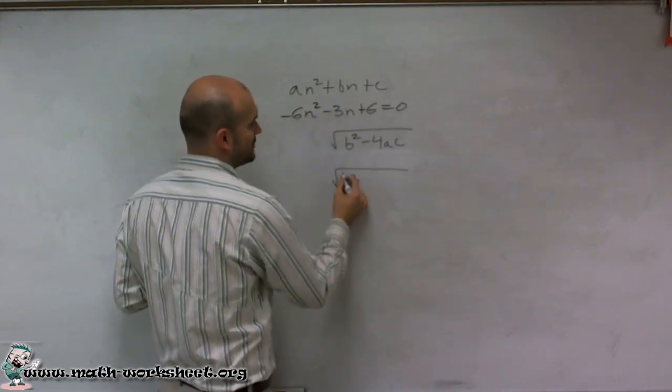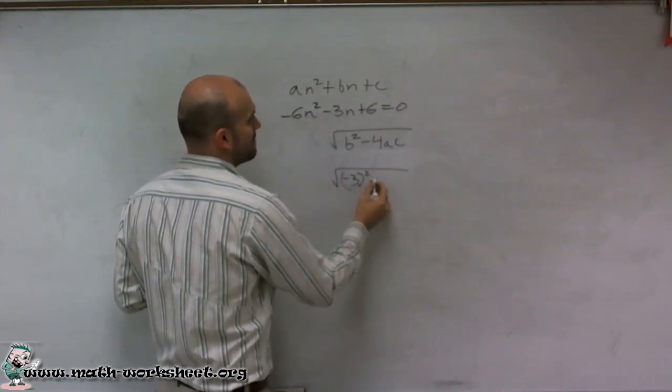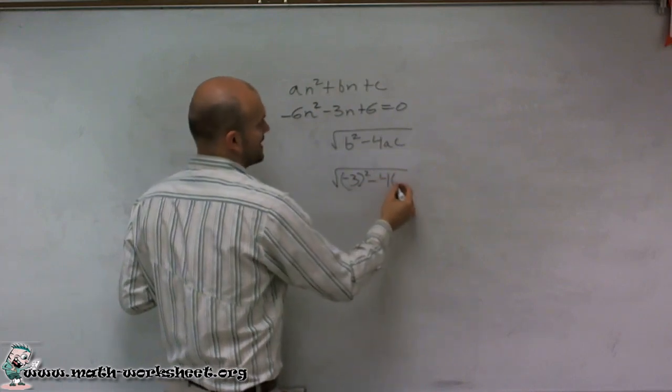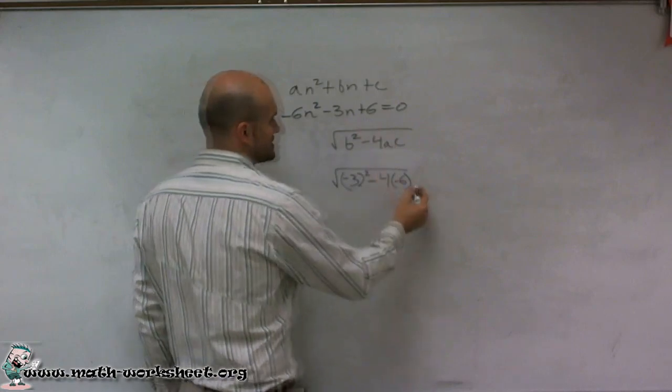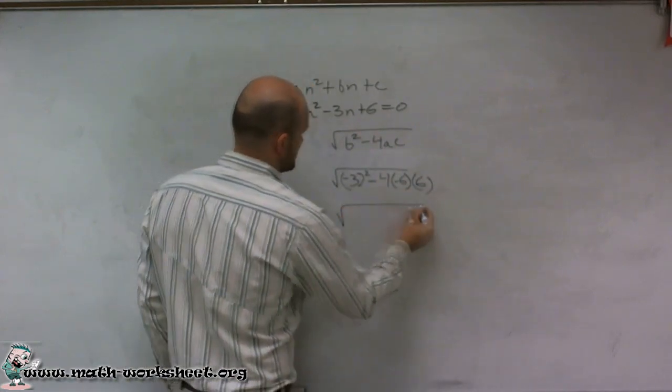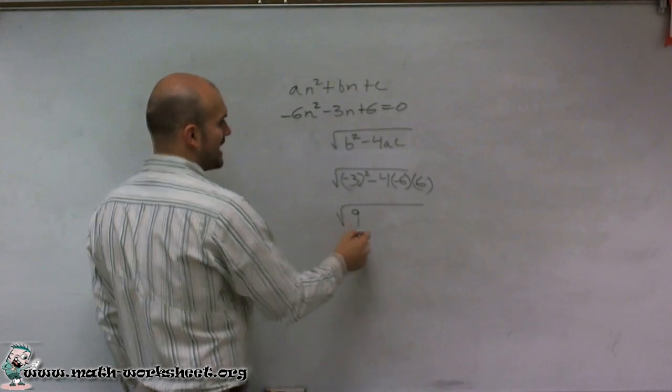So here my b is going to be negative 3 squared minus 4 times negative 6 times c, which is positive 6. So therefore, I get 3 squared, which is 9.